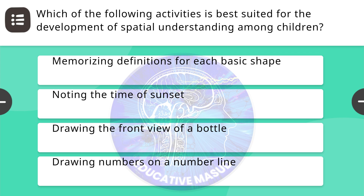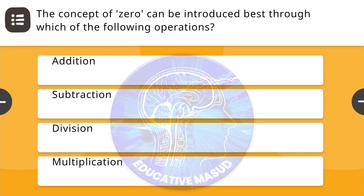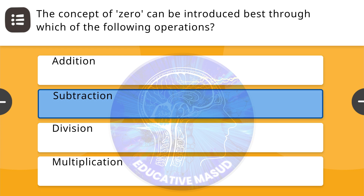Next question: which of the following activities is best suited for the development of spatial understanding among children? Correct answer is drawing the front view of a bottle. Next question: the concept of zero can be introduced through which of the following operations? Correct answer is subtraction.